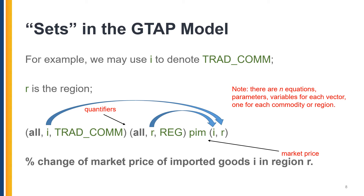More quantitatively, we may use the letter I to denote traded commodity, or TREDCOM, whereas the letter R represents the region. What we are seeing here in the parentheses are called quantifiers. The first one says that there would be one formula or equation for every commodity I in a set TREDCOM. The TREDCOM may include elements such as corn and soybeans. Similarly, the second quantifier says that there will be one formula or equation for every region R in a set region. Lastly, PIM is the variable name meaning market price, which in TABLO is the percent change of market price. So PIM(I,R) means percent change of market price of imported goods I in region R.